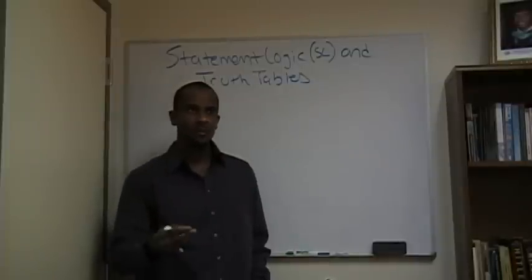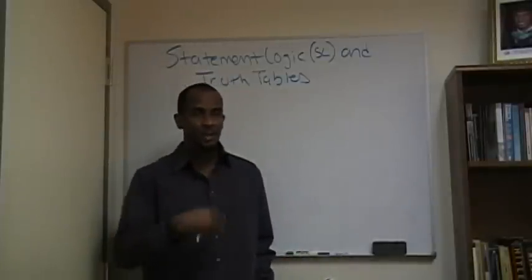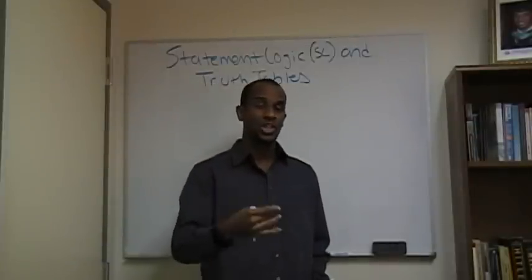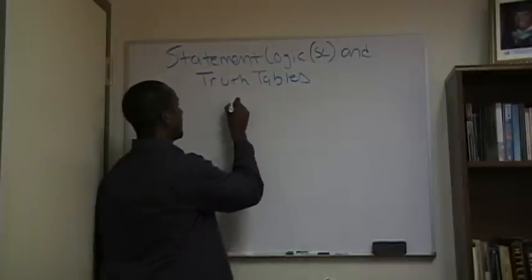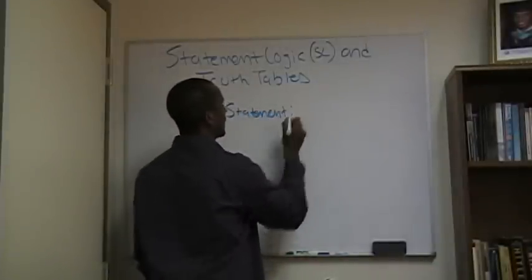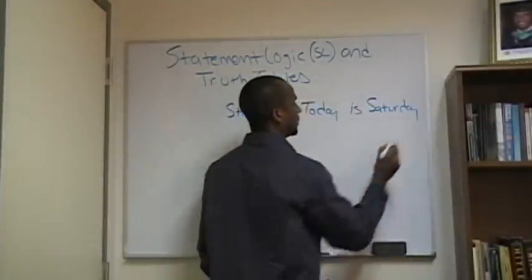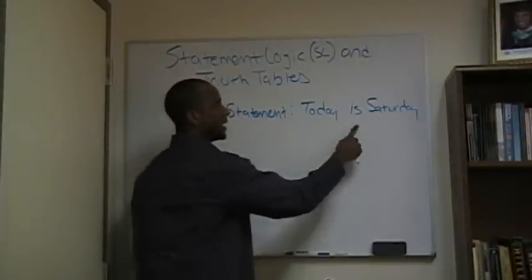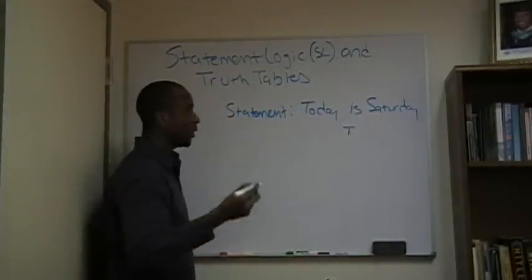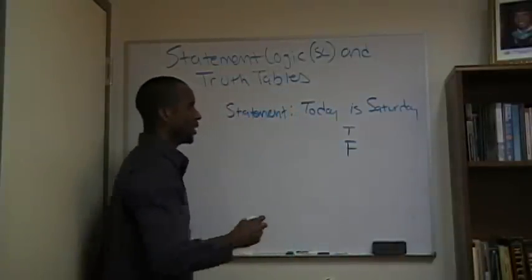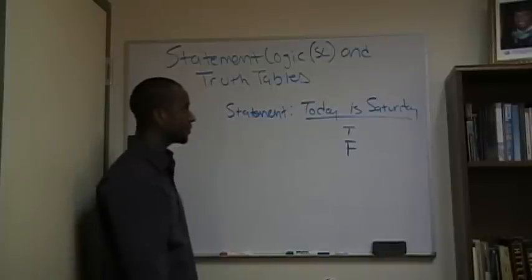Any statement that's made, if that statement is said to have truth functionality, then the truth functionality of that statement is either going to be true or false. For example, I can make the statement that today is Saturday. This statement is either going to be true if today is Saturday, or if it's not Saturday, it'll be false. So for this one statement, it is either going to be true or false. Pretty basic.